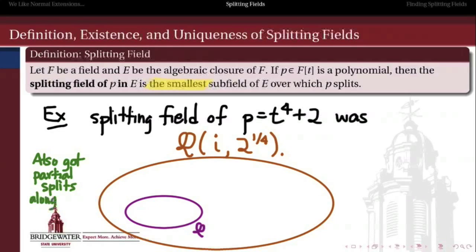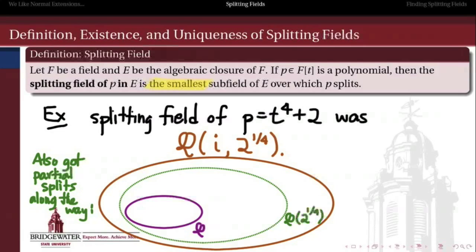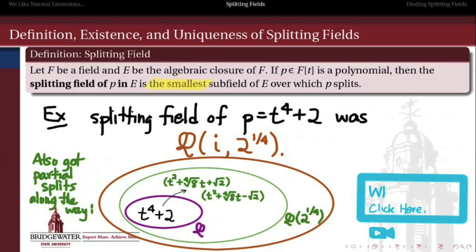Along the way, we also got some partial factorizations. There's a field that contains only the fourth root of 2 but not i — if we extend to that field, t⁴ + 2 factors a little bit but doesn't split completely. It does split if we go all the way to the field containing i and the real fourth root of 2. One interesting thing: when we extend using i first and then the fourth root of 2, we don't get any factorization at the first step, and then we get all the factorization at the last step. There are multiple different ways to construct a field when extending more than once, but we would really get the same splitting field either way.